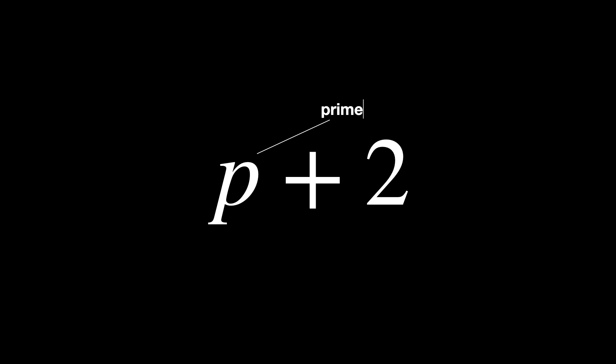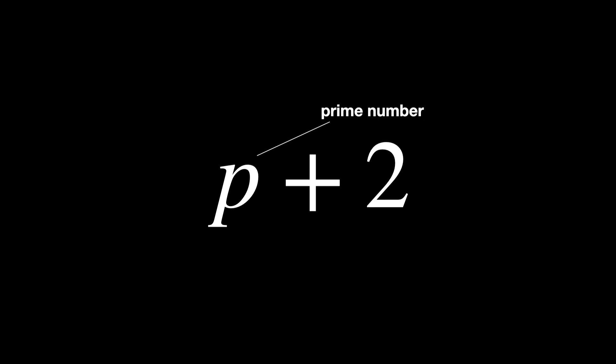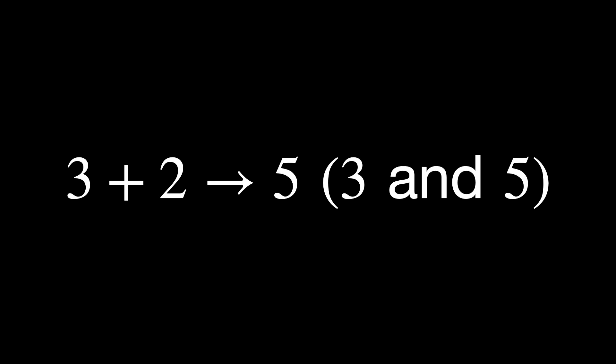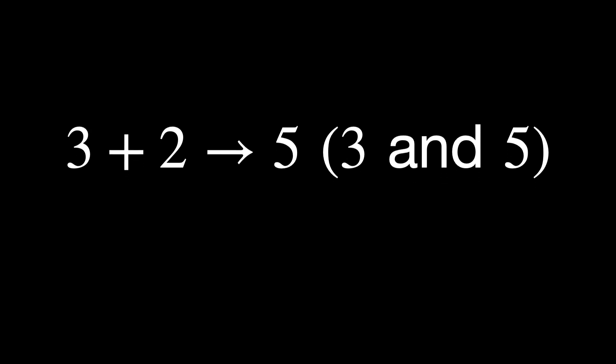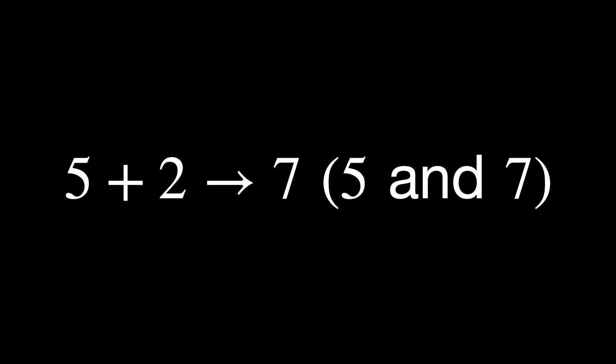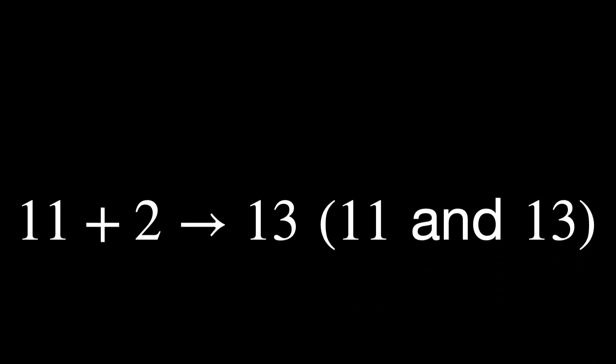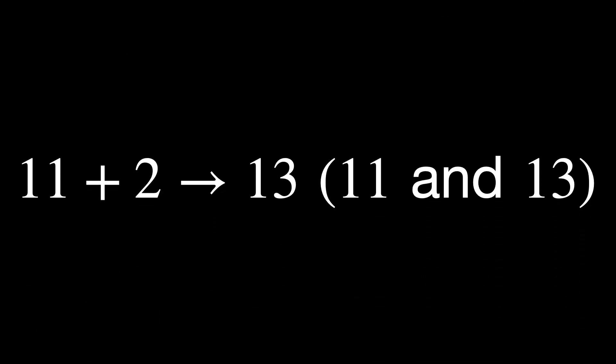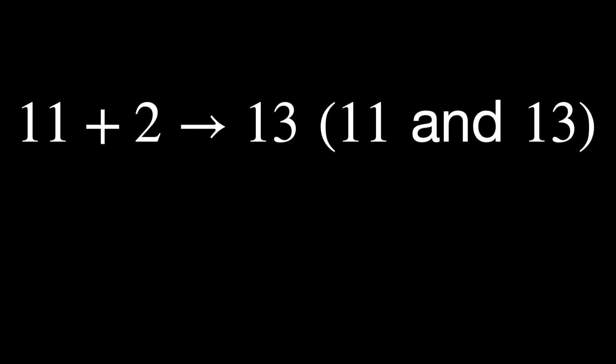The last pattern observed is that primes tend to sometimes crowd themselves in the form p and p+2, where p is a prime number. So like 3 plus 2 is 5 — so 3 and 5. 5 plus 2 is 7 — so 5 and 7. 11 plus 2 is 13 — so 11 and 13. And even 29,669 plus 2, which is 29,671, both of which are prime numbers.